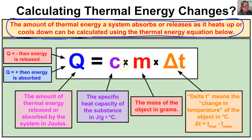The thermal energy equation tells us that the total amount of thermal energy either released or absorbed by a system is equal to the specific heat capacity of that object, times the mass of that object in grams, times the change in temperature of that object, typically in degrees Celsius.